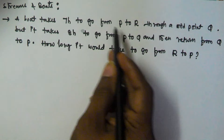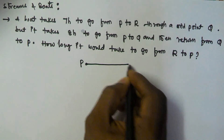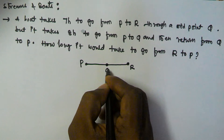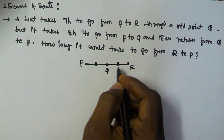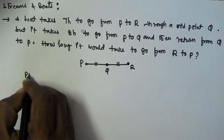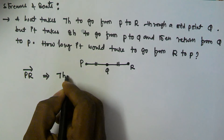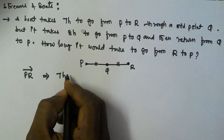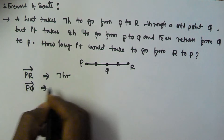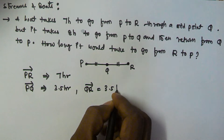So there are two points P and R, and Q is the midpoint of P and R, so PQ and QR are equal distances. A boat takes 7 hours to go from P to R. Since Q is the midpoint, it will take 3.5 hours to go from P to Q, and Q to R will also take 3.5 hours.